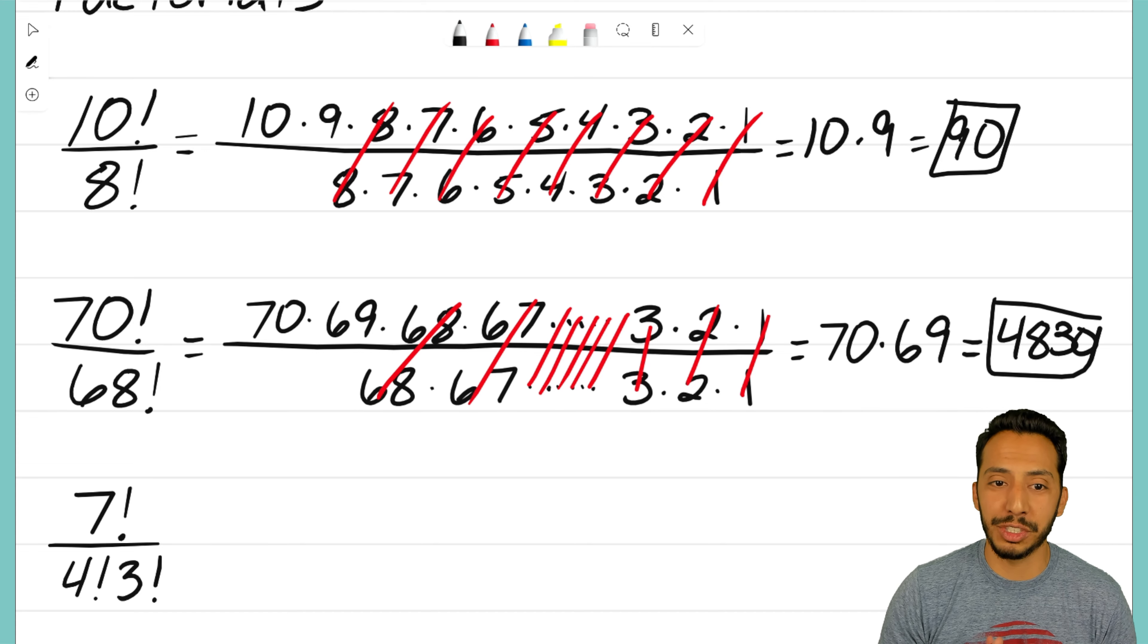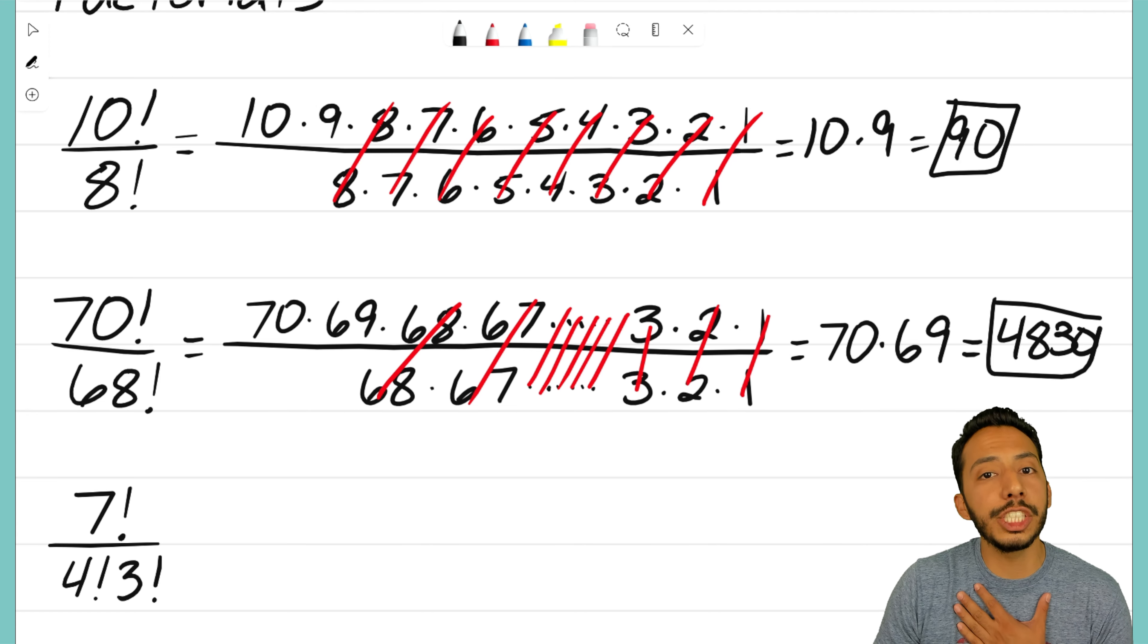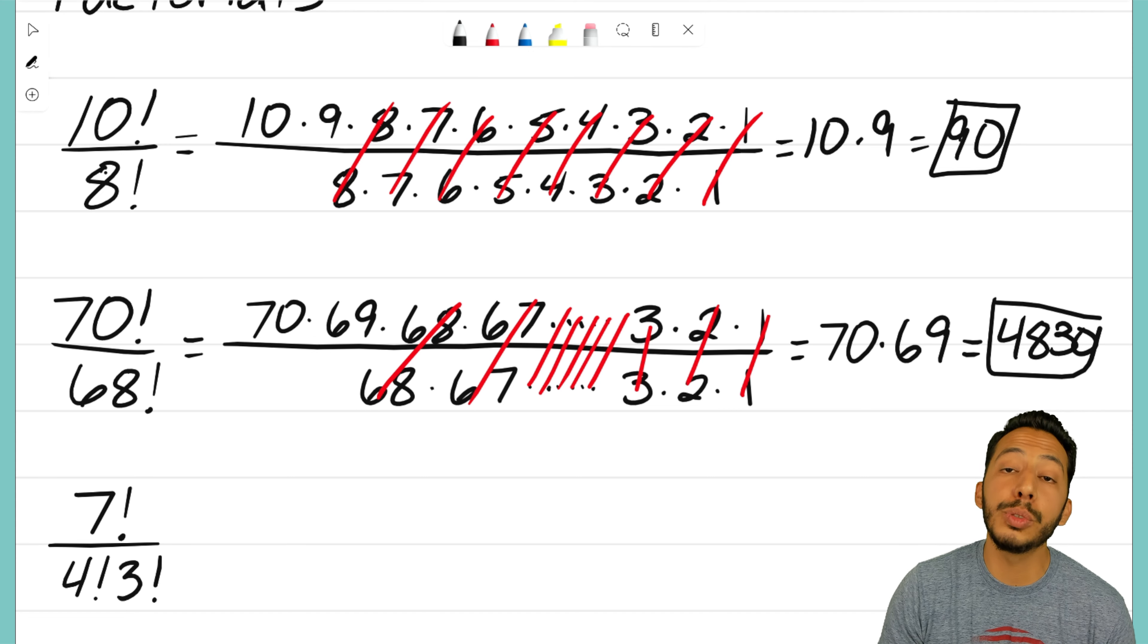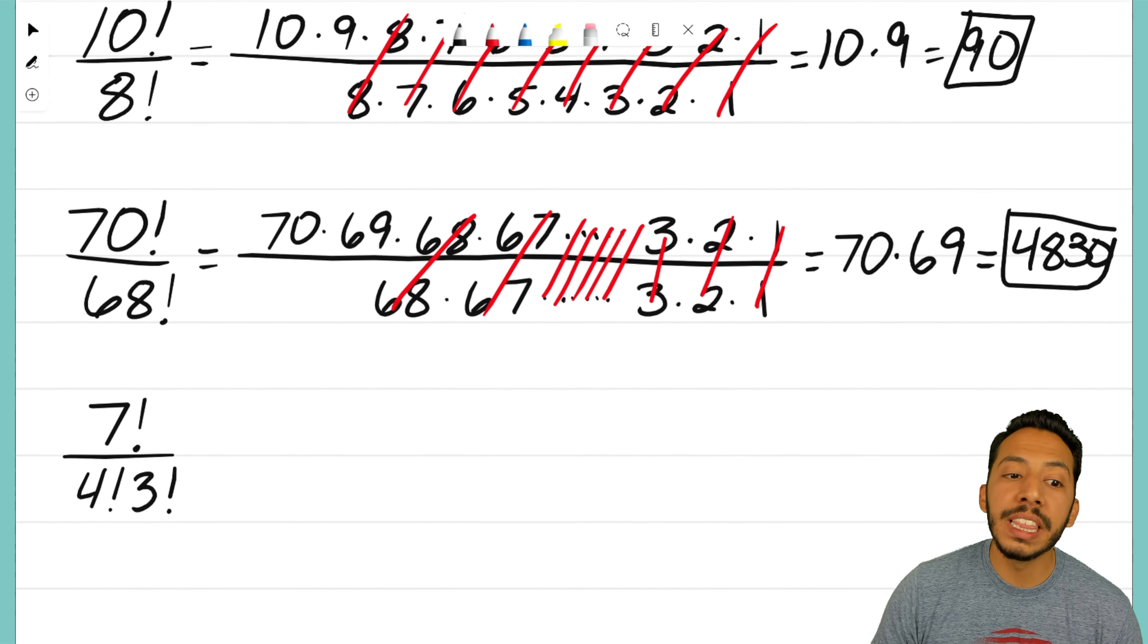That ends up being the final answer for that huge complicated messy fraction. It actually wasn't even that messy because the factorials allow us to cancel out all those matching terms. Just for the record, it's not always going to be two numbers—it just so happens there were two numbers left over because both were two numbers apart.